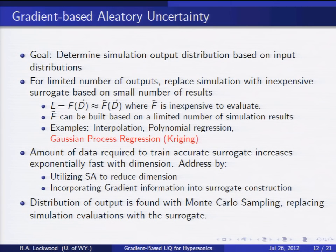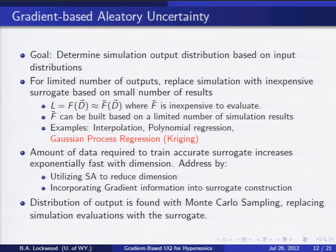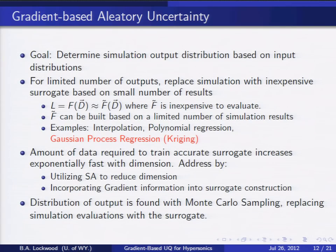For aleatory uncertainty quantification, our goal is to determine the output distribution. Many works use a surrogate-based approach: because our simulation is just a mapping, we build an approximate mapping from a limited number of simulation results and interrogate it to determine the output distribution. Different forms include interpolation, polynomial regression — I focused on Gaussian process regression. The problem with surrogate-based approaches is that the training cost increases exponentially fast as we include more model parameters. However, if we incorporate gradient information as we expand the dimension, we also get more information and should be able to reduce the cost of constructing the surrogate.